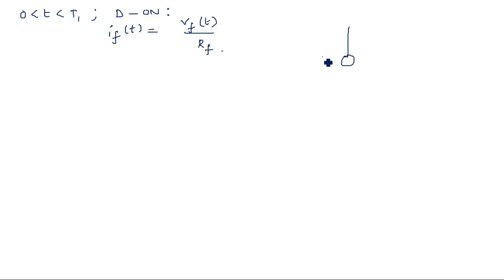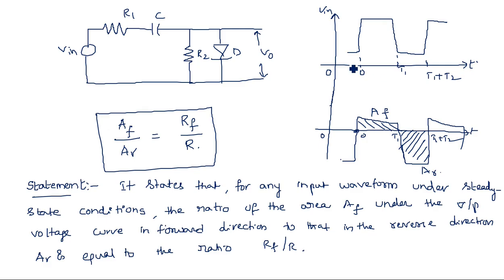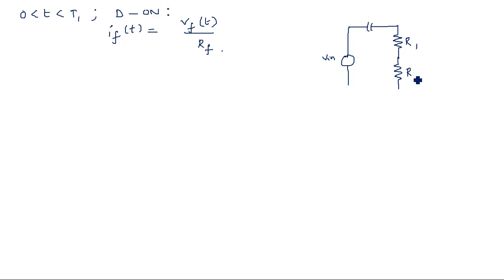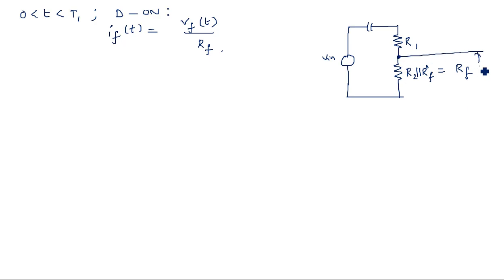Drawing the equivalent circuit: we have the input voltage Vin, the capacitor, and resistance R1. When the diode is on, it exhibits forward resistance rf, and rf is in parallel with R2, giving a combined resistance rf'. The output voltage is taken across this resistance rf.